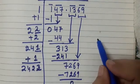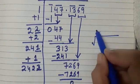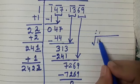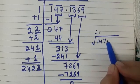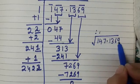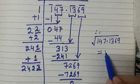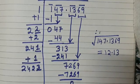Answer is square root of, therefore square root of 147.1369 is equal to 12.13. Is it clear to you?